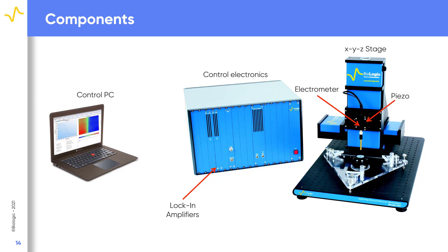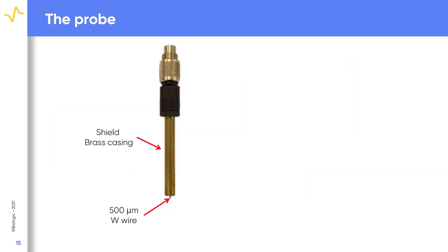The electrometer is required to measure the electrical potential of the system. The backing potential controller applies the potential required to null the charge between the probe and sample, done in real time using a PID control loop. Because the probe-to-sample distance affects the final signal measured and therefore sample tilt can affect the measurement, it is important that the sample can be mounted to remove tilt. On the M470 this is typically achieved using the tricell. Of particular importance in the SKP measurement is the probe, which affects the resolution and quality of the final measurement. Biologic's standard probe is a 500 micron tungsten wire within a brass shield, used to reduce parasitic noise in the measurement.